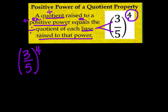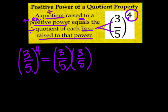Essentially what it is saying is we have 3 fifths — 3 over 5 — those are our base numbers, 3 and 5, raised to the fourth power. This can be rewritten as 3 over 5, times 3 over 5, times 3 over 5, times 3 over 5.